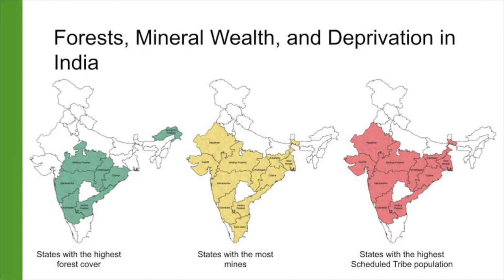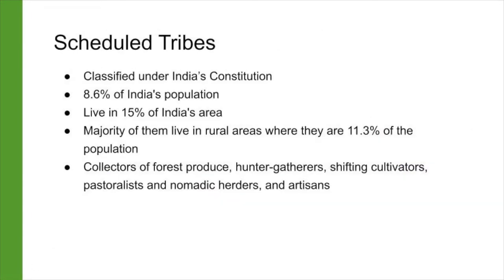Madhya Pradesh, Maharashtra, Odisha, Gujarat, Rajasthan, Jharkhand, Chhattisgarh, Andhra Pradesh, West Bengal, and Karnataka are the states with the largest populations of Scheduled Tribes — also some of the states with the largest area under forest cover. Madhya Pradesh, Jharkhand, Chhattisgarh, and Odisha also fall below the national average for the proportion of people living above the poverty line.